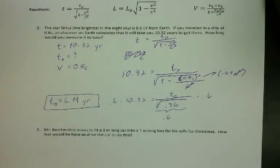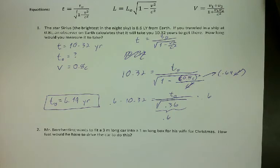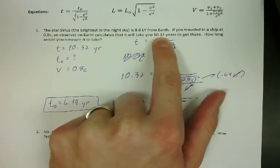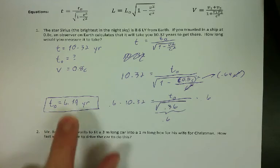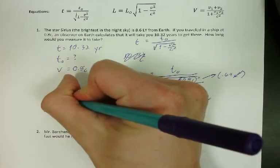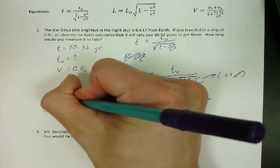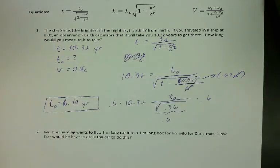It's really important on these problems to check your work and make sure your answer makes sense. This is called time dilation, which means the person observing from the outside should measure a longer time than the person experiencing it inside the reference frame. The person on Earth measured 10.32 years — they're outside the reference frame. The person on the spaceship measured 6.19 years. T-not should be less than T, and it is.